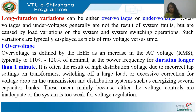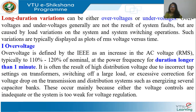Long duration variations are either over voltage or under voltage. Over voltages and under voltages generally are not the result of system faults, but are caused by load variations on the system and system switching operations.